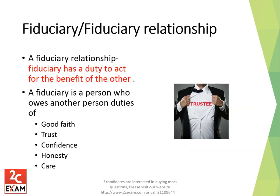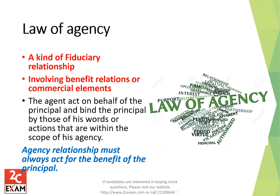A fiduciary has a duty to act for the benefit of the other. A fiduciary is a person who owes another duties of good faith, trust, confidence, honesty, and care — for example, a parent to a child. Agency is a kind of fiduciary relationship involving commercial elements: the agent, as a fiduciary, acts on behalf of the principal and binds the principal by words or actions within the scope of his agency. Agency is a form of fiduciary relationship with commercial benefits.